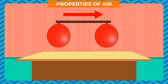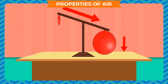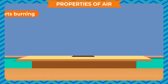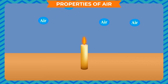Tie one balloon at each end of a stick. Tie the stick with a string at its center and balance it by shifting the position of the balloons. As we hold the stick up by the string at its center, the stick remains straight. Now prick one balloon with a needle to burst it. The end with the burst balloon goes up, because the burst balloon has no air in it and so it becomes lighter. This shows that air has weight.